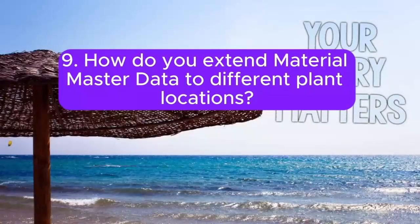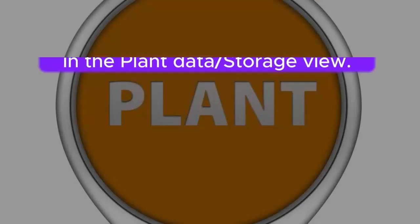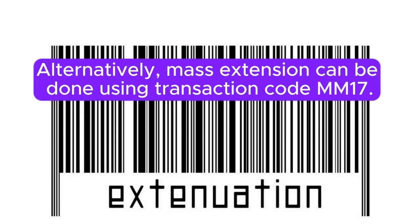Question 9: How do you extend Material Master data to different plant locations? Material Master data can be extended to different plant locations using the transaction code MM01 (create material) and selecting the appropriate plant in the plant data or storage view. Alternatively, mass extension can be done using transaction code MM17.